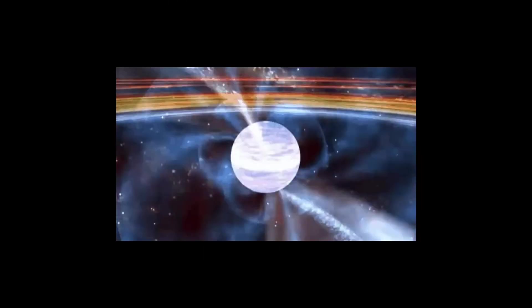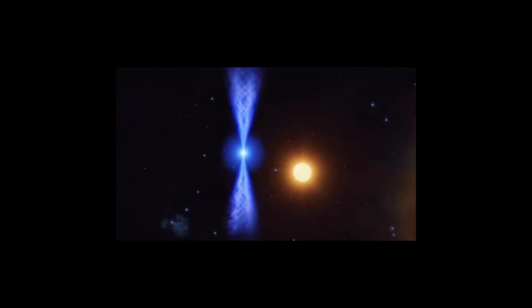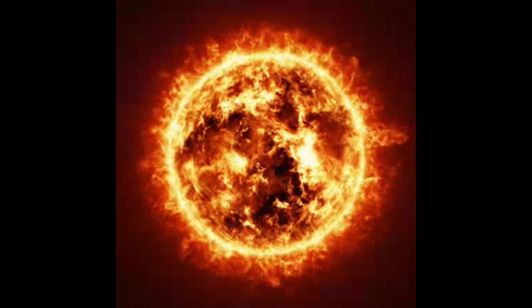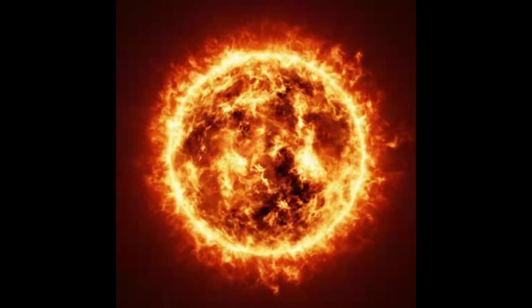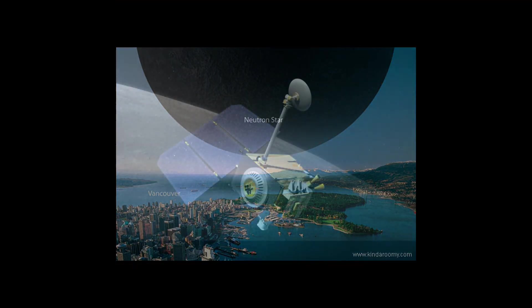Neutron stars are one of, if not the densest objects in the universe. They are around 12 miles in diameter, but are denser than our sun, which is 72,000 times bigger than a neutron star.